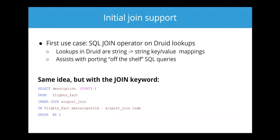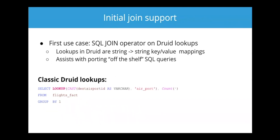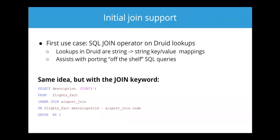There are a couple of interesting things here. This query is actually going to run using the classic Druid lookup under the hood, but the SQL layer now understands it and knows how it works. It should say INNER JOIN lookup.air_port — the 'lookup.' prefix is what you use in Druid SQL to signify you want to query a lookup. This enables using the classic Druid lookup feature with the JOIN keyword in SQL, which is nice for a variety of reasons.